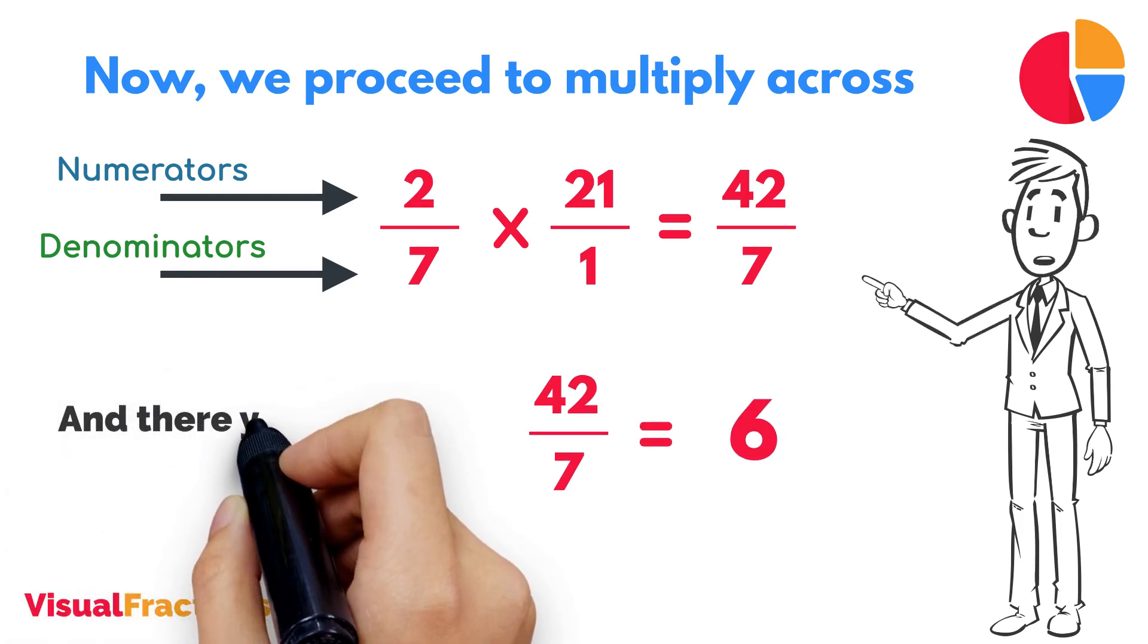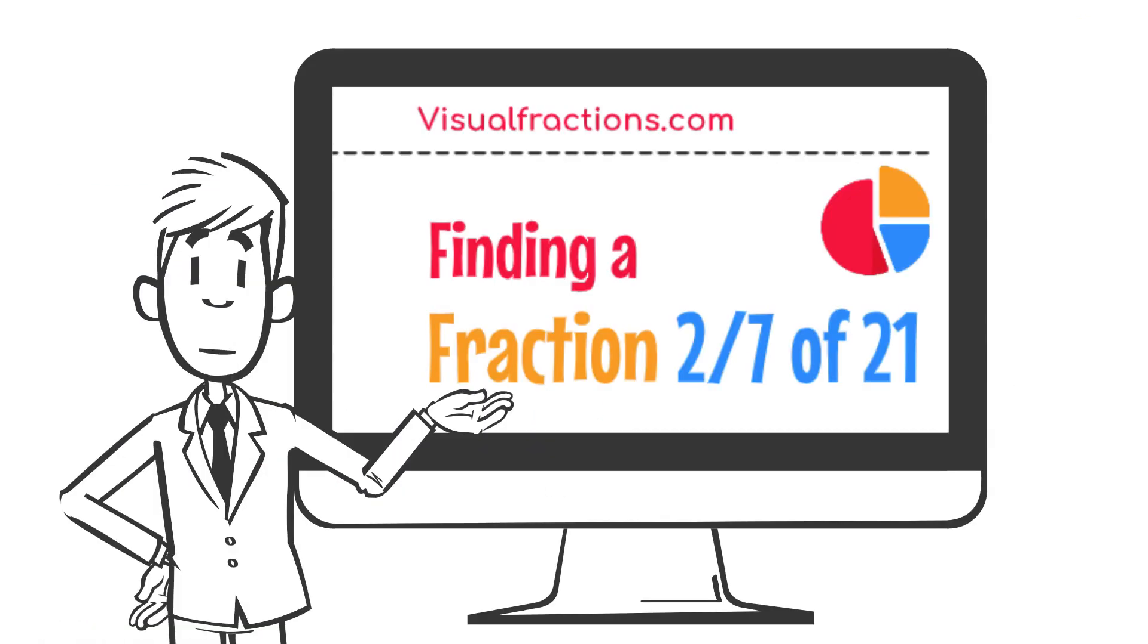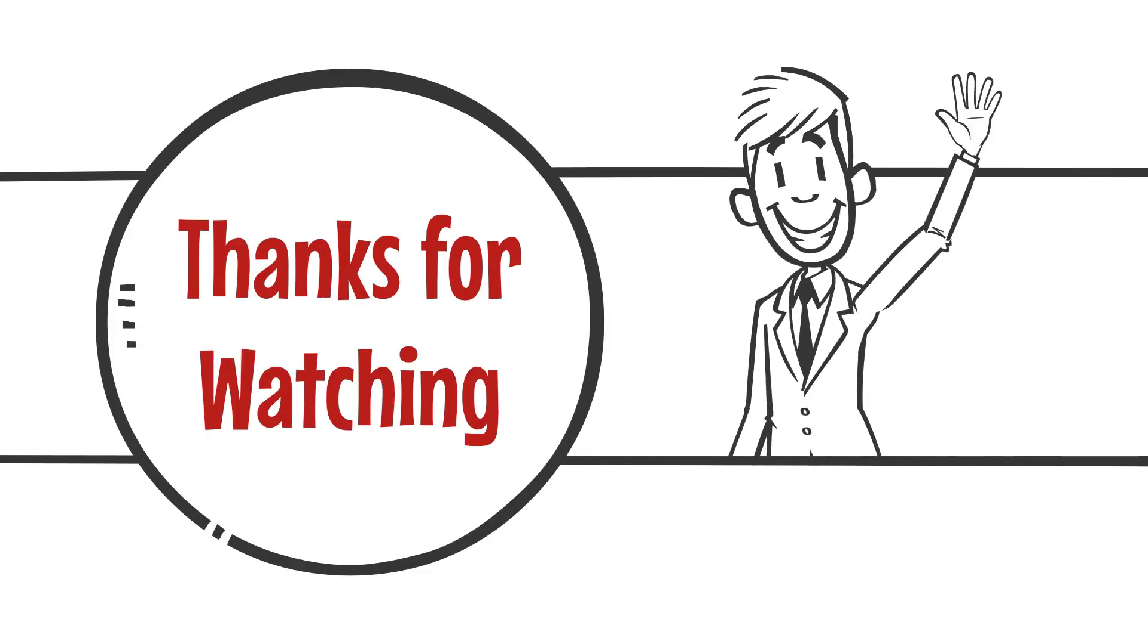And there you have it. 2/7 of 21 is 6. If you found this tutorial helpful, go ahead and smash that like button and don't forget to subscribe to Visual Fractions. Thanks for watching.